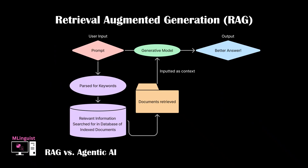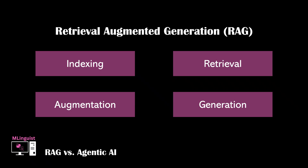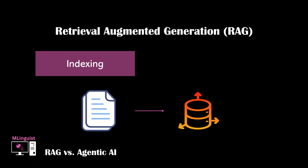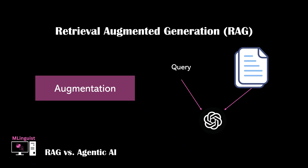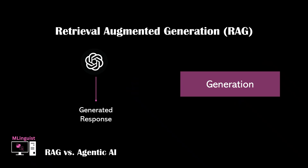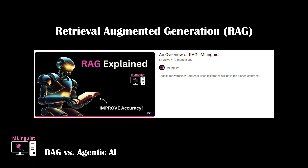I've made a video on RAG before, but here's an overview of the core process once again. RAG works in four key steps: indexing, retrieval, augmentation, and generation. When indexing, documents are embedded into vectors and stored in a database. At query time, the system retrieves the most relevant text — the retrieval step. These texts are then combined with the user's query in the augmentation step, and fed to the LLM to generate a final response using both the user query and retrieved information. Feel free to check out my more in-depth video overview of RAG systems at the link in the pinned comment.